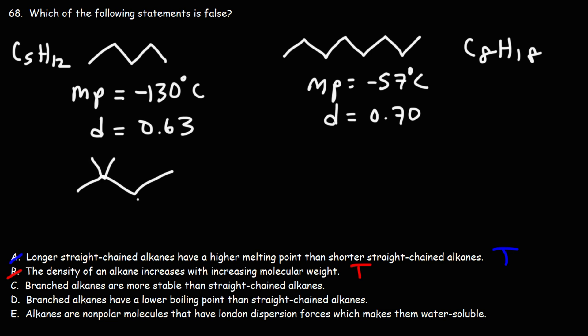Well, let's write up an example. Here we have 2-2-3-3 tetramethylbutane. Let's compare that to octane. Both of them have the same chemical formula: 8 carbon atoms, 18 hydrogen atoms.